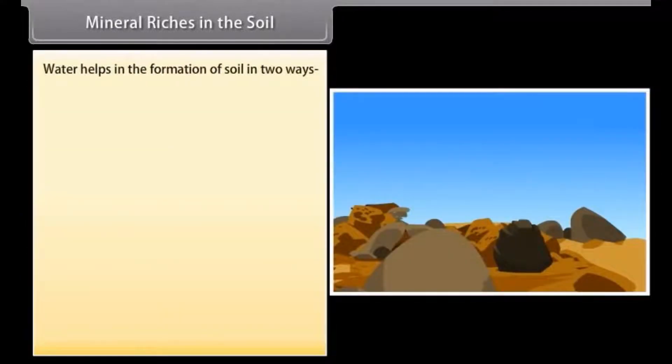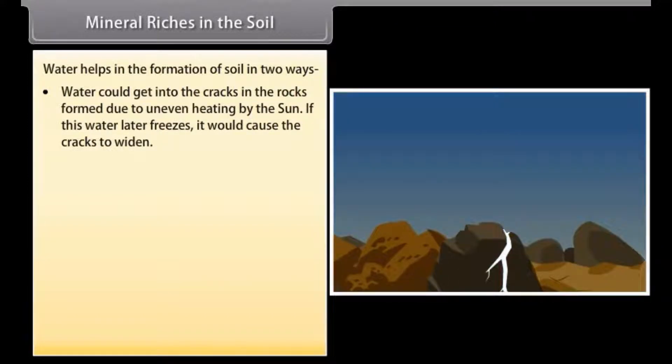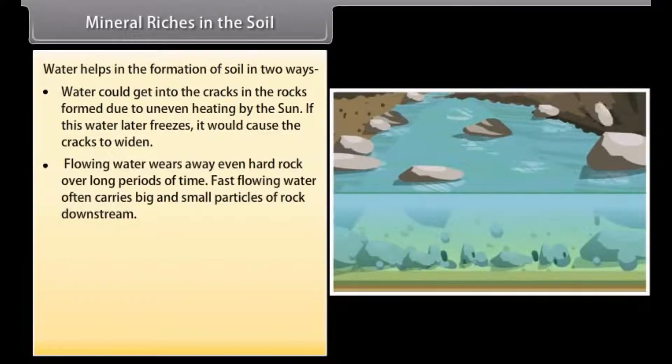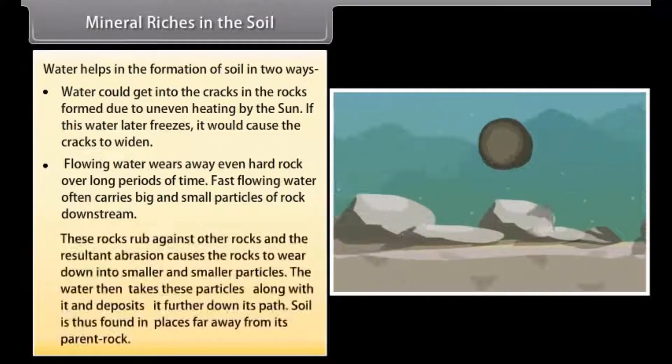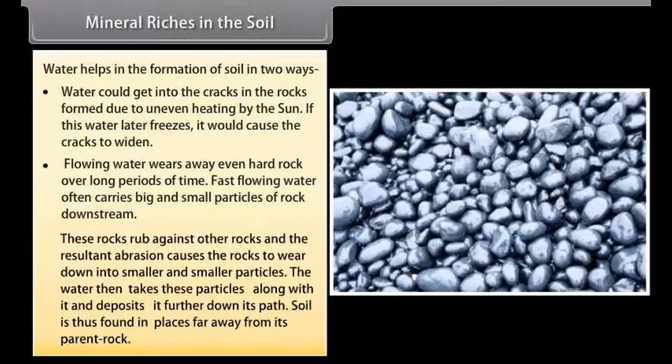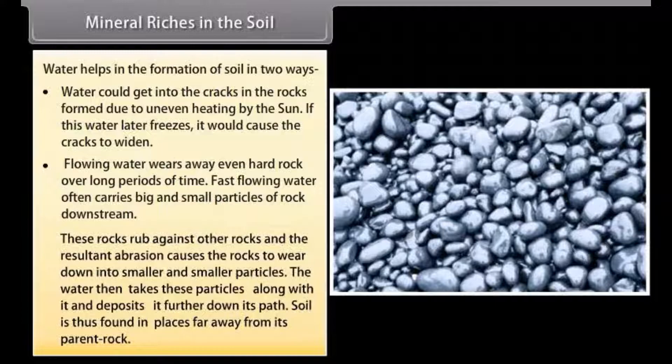Water helps in formation of soil in two ways. Water could get into the cracks in the rocks formed due to uneven heating by the sun. If this water later freezes, it would cause the cracks to widen. Flowing water wears away even hard rock over long periods of time. Fast flowing water often carries big and small particles of rock downstream. These rocks rub against other rocks and the resultant abrasion causes the rocks to wear down into smaller and smaller particles. The water then takes these particles along with it and deposits it further down its path. Soil is thus found in places far away from its parent rock.